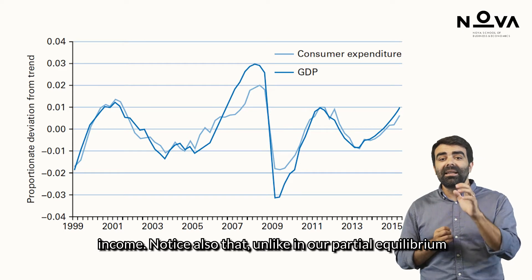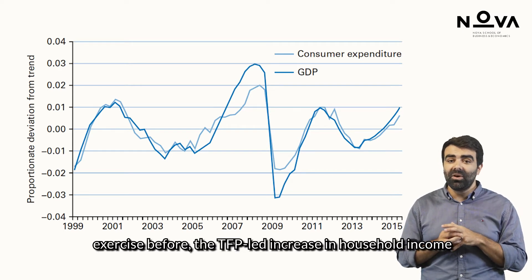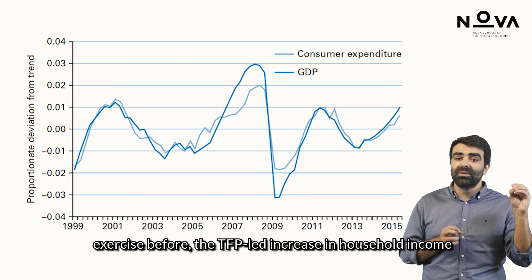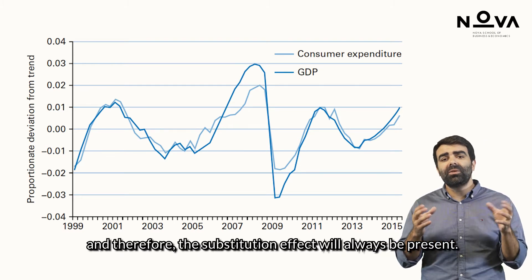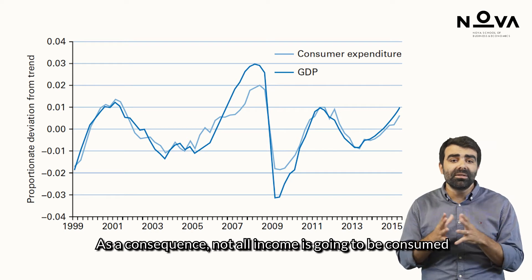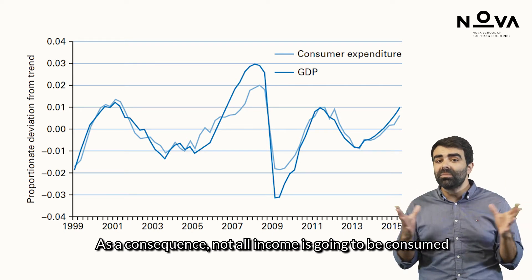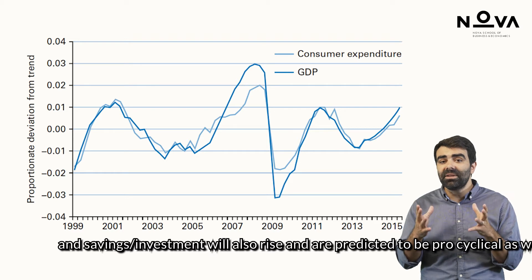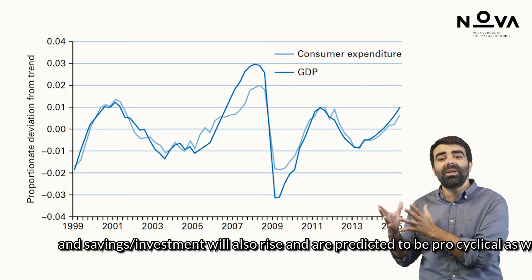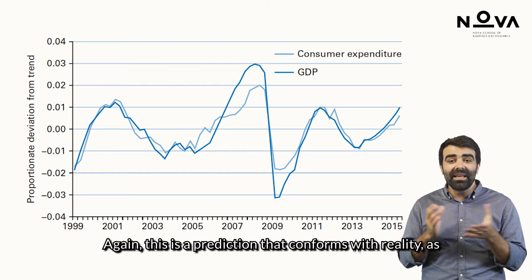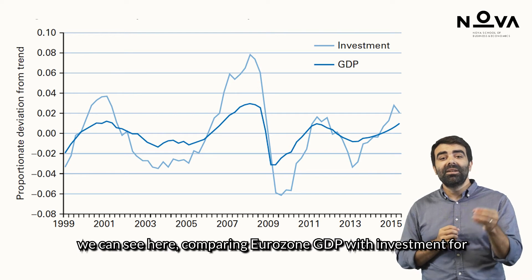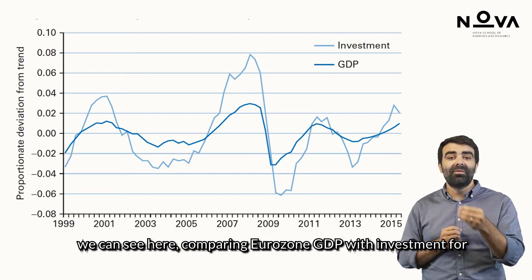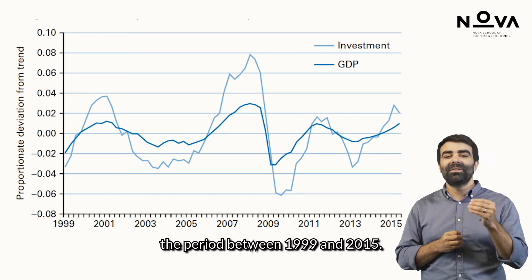Notice also that unlike in a partial equilibrium setting, the TFP-led increase in household income is always accompanied by an increase in the interest rate. Therefore, the substitution effect will always be present. As a consequence, not all income is consumed, and savings and investment will also rise — predicted to be pro-cyclical as well. This is a prediction that conforms with reality, as we can see comparing Eurozone GDP with investment for the period between 1999 and 2015.